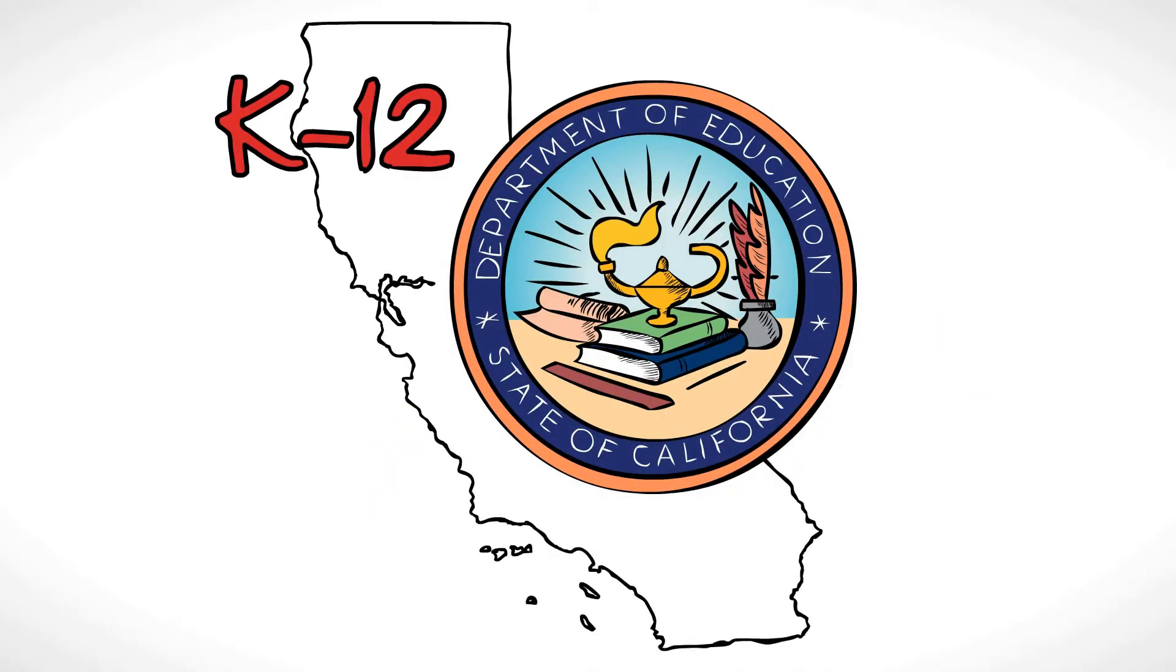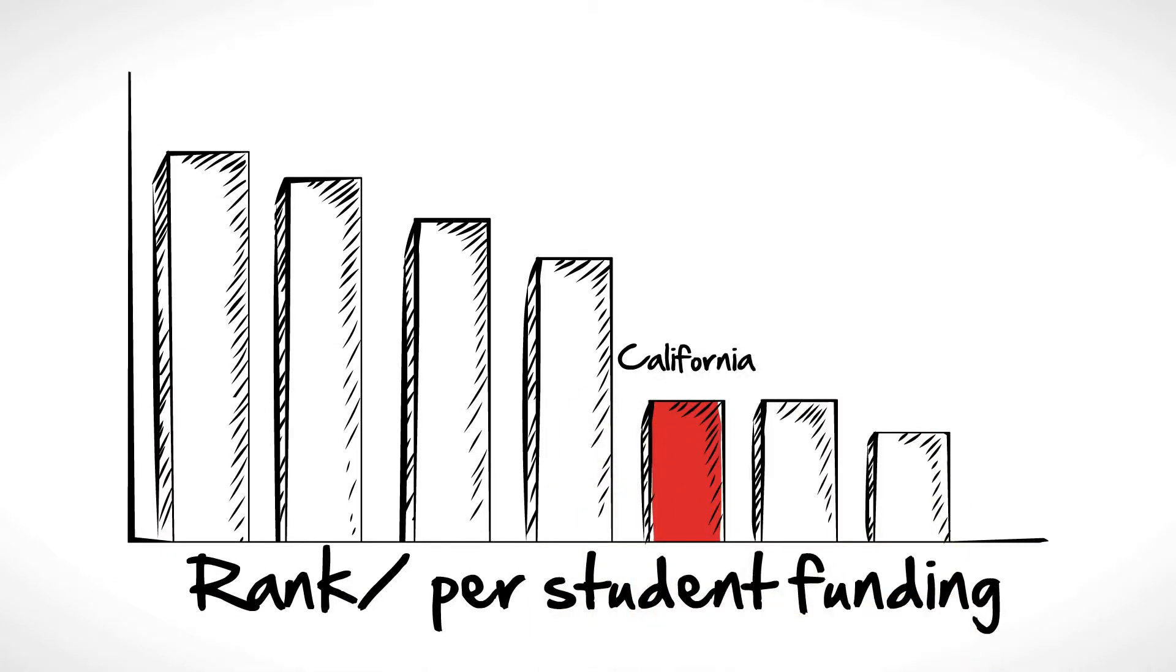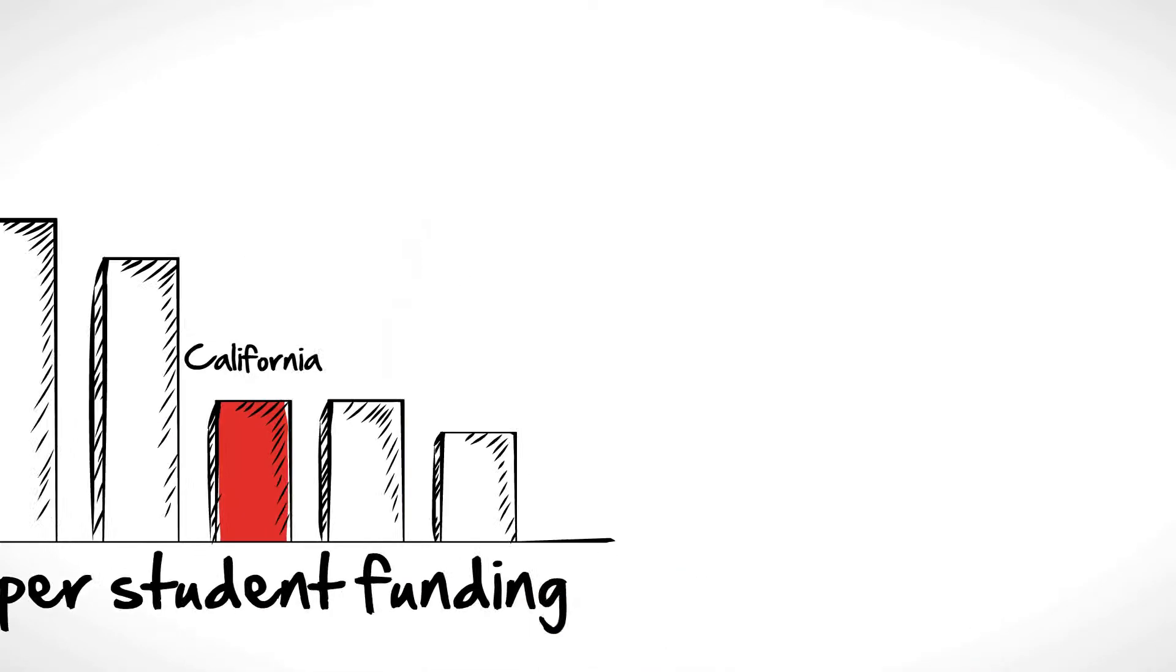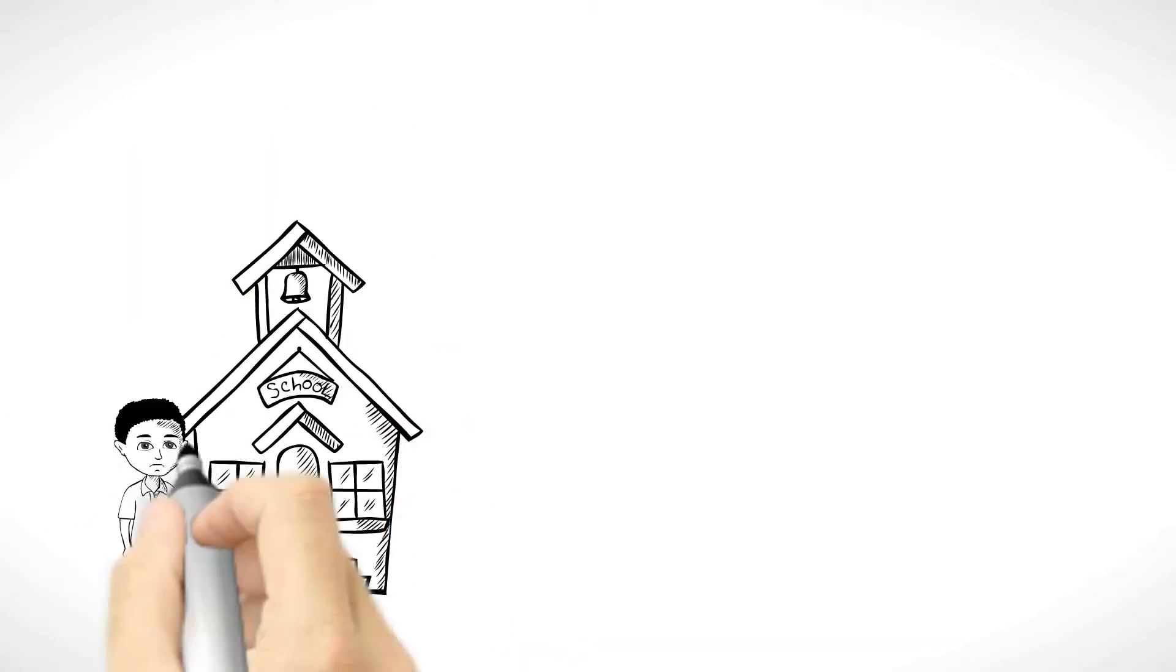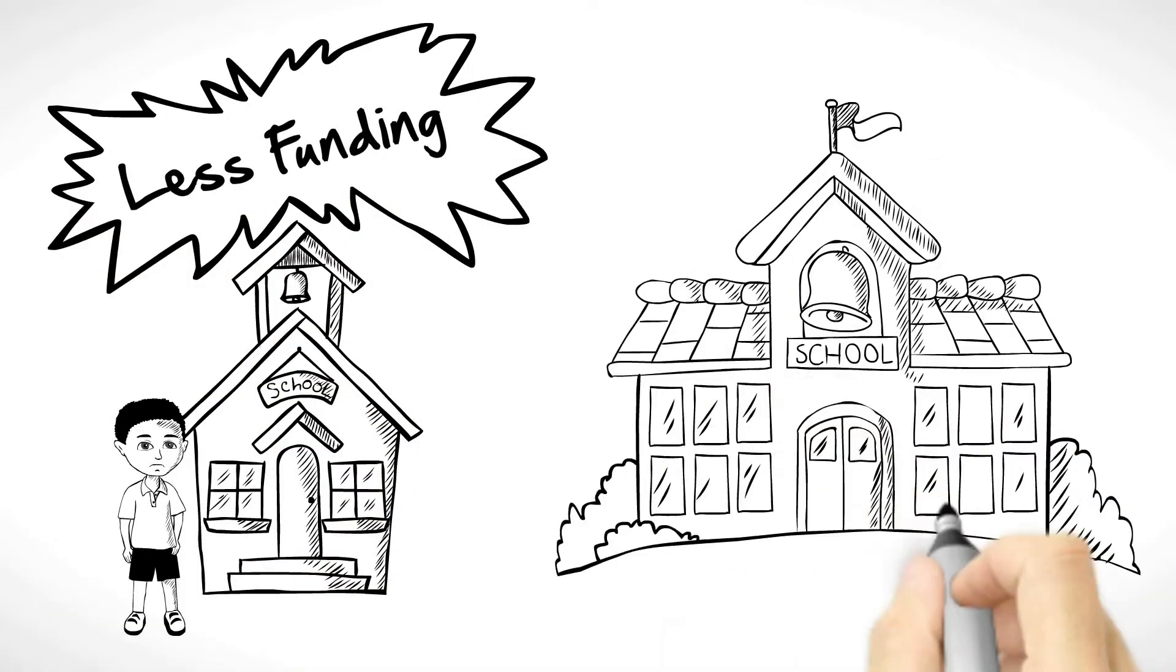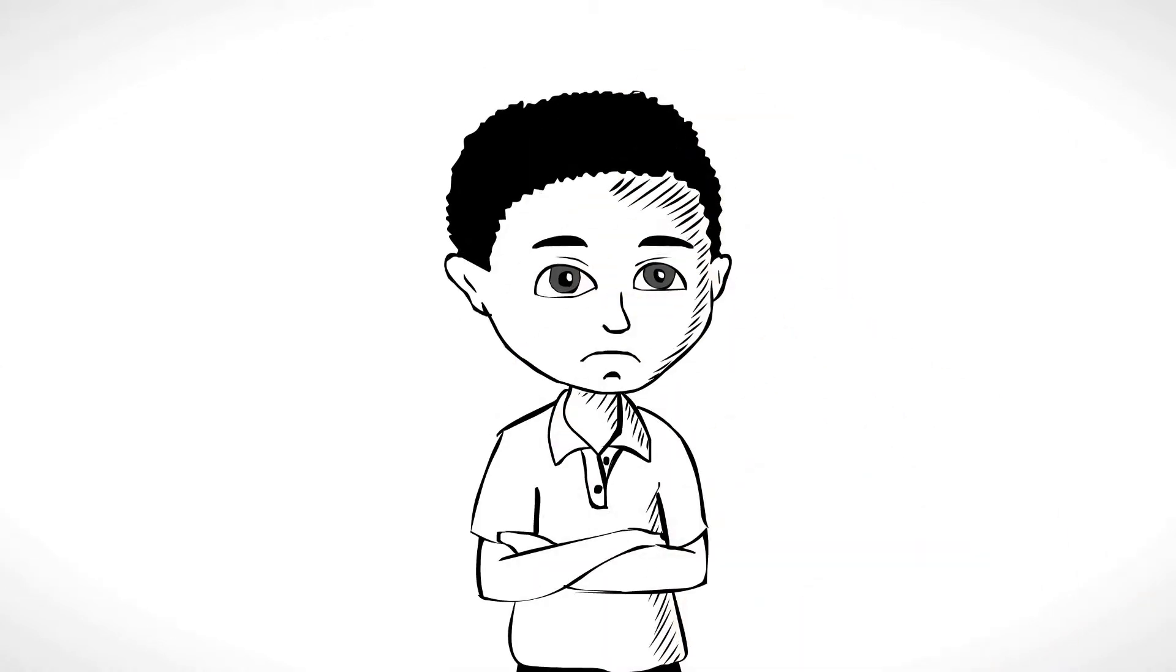K-12 education in California is in crisis. Not only does California rank near the bottom in per-student funding, and spending has been drastically cut, but students in low-income schools receive less funding than kids in well-to-do neighborhoods. This is not fair. This is not right. We can do better.